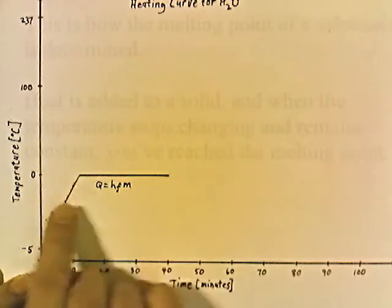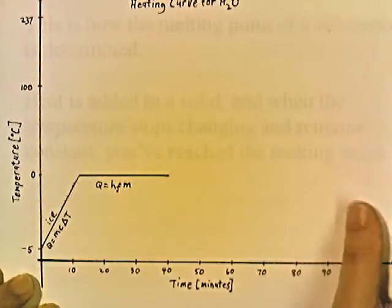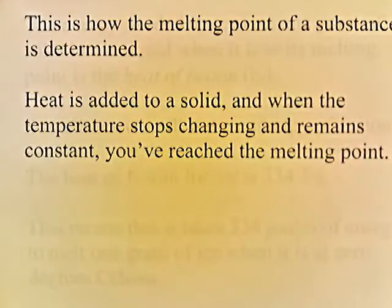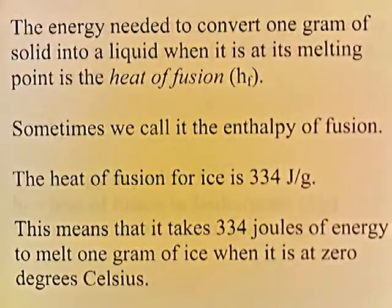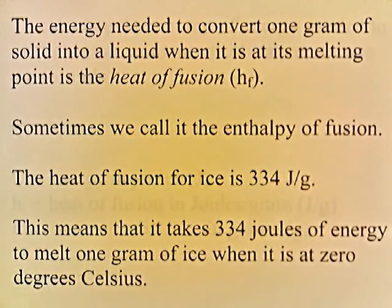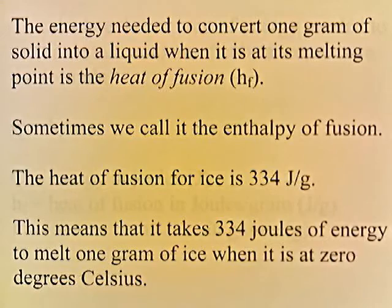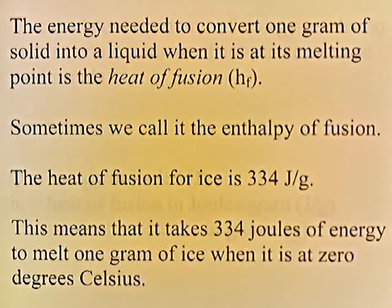This is the solid phase, and then the substance goes from solid to liquid. This is how the melting point of a substance is determined: heat is added to a solid, and when the temperature stops changing and remains constant, you've reached the melting point. The energy needed to convert one gram of a solid into a liquid at its melting point is the heat of fusion, sometimes called the enthalpy of fusion. The heat of fusion for ice is 334 joules per gram.